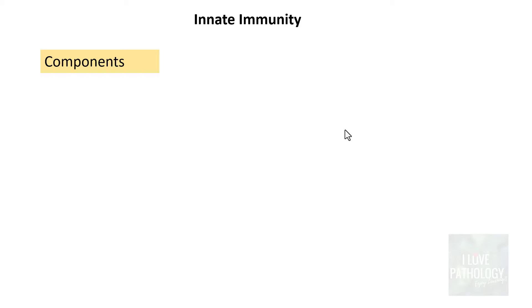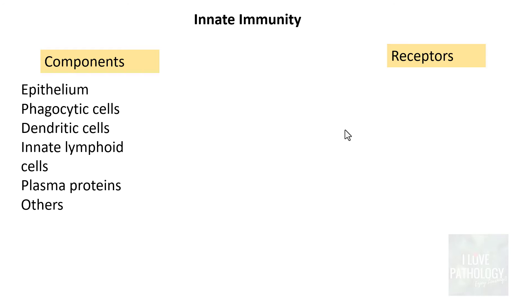Now let us understand more about innate immunity. To do so, we need to know the components of innate immunity and the various receptors involved. The components of innate immunity are: the epithelium, phagocytic cells, dendritic cells, innate lymphoid cells, plasma proteins, and various other cells.